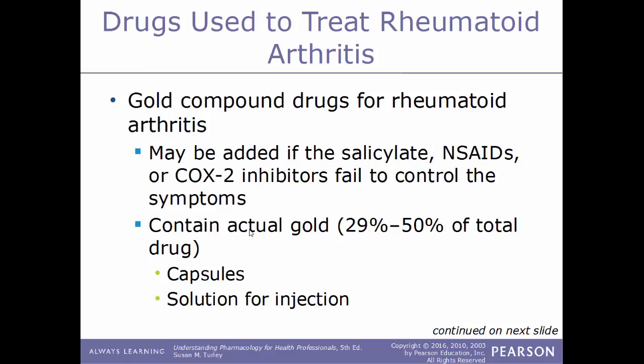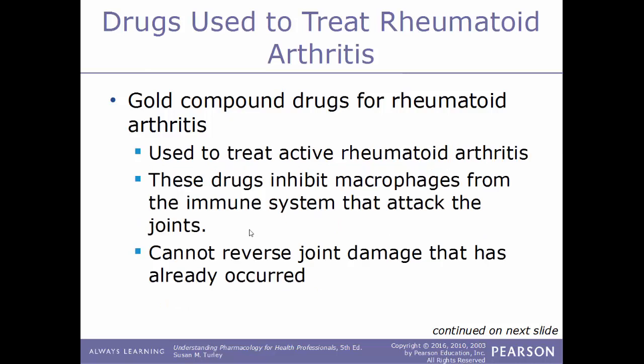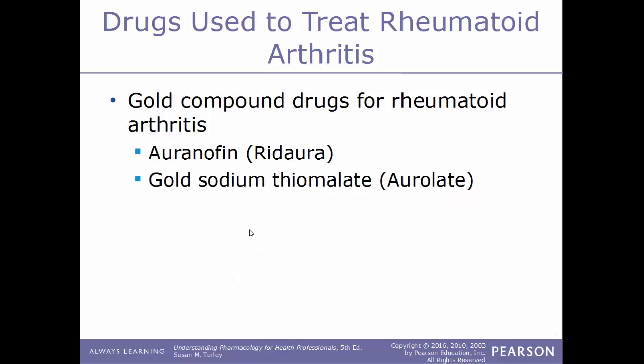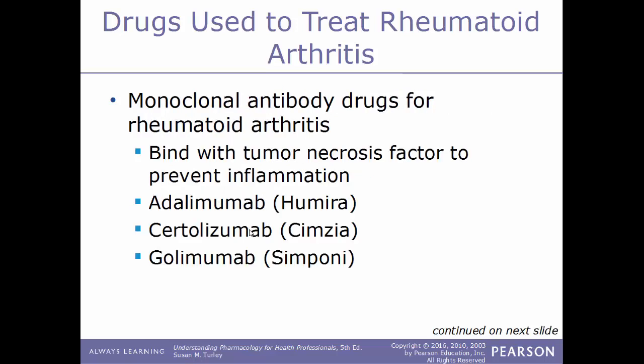Another type of drug that may be added if salicylates, NSAIDs, or COX-2 inhibitors fail to control symptoms are gold compound drugs. These actually contain gold — anywhere from 29% to 50% of the total drug — and can be given through capsules or as an injectable solution. They work by inhibiting macrophages from the immune system that attack the joints, though they cannot reverse existing joint damage. Examples include auranofin known by the trade name Ridaura, and gold sodium thiomalate sold under the trade name Myochrysine.